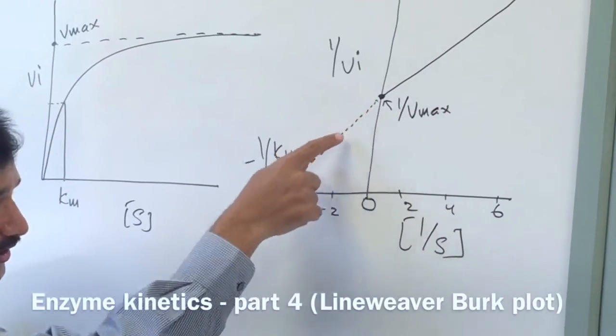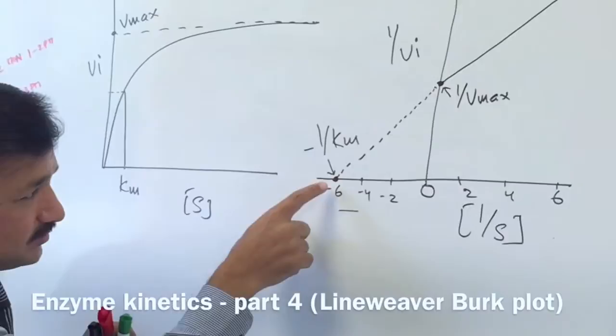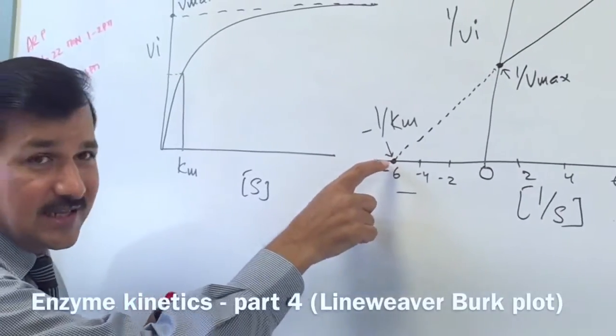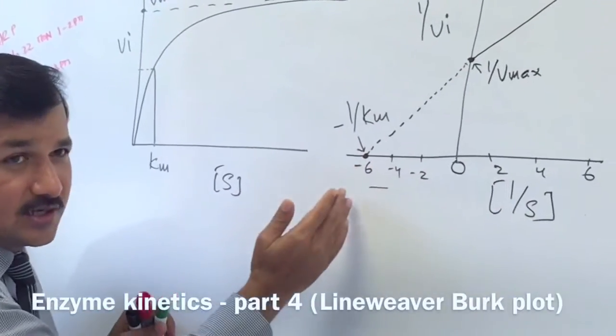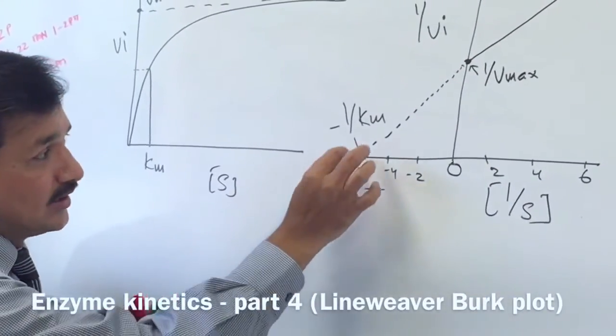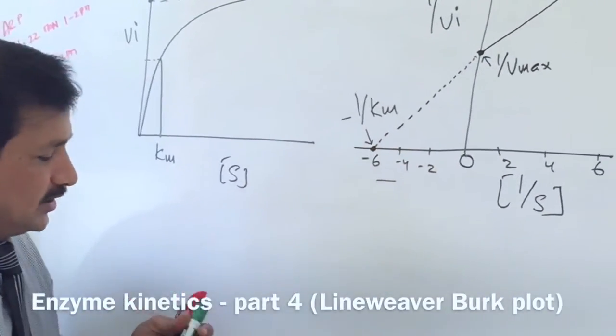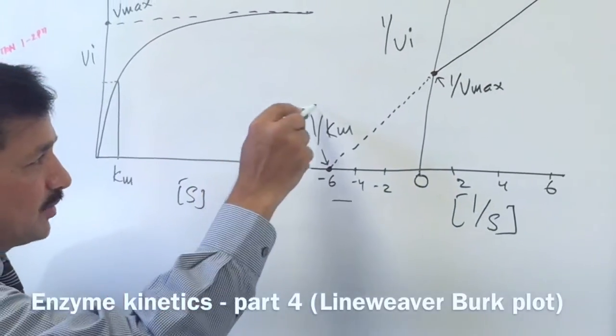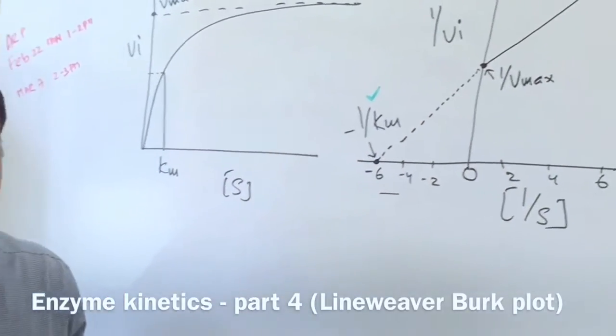If you elongate that line and make it meet the x-axis on the other side of 0, that particular point is referred to as minus 1 over Km.